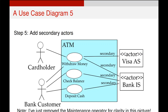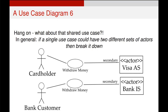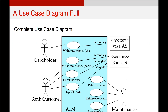The catch, though, is that you can have use cases which are different depending on which actor uses them. An example might be 'Withdraw Money': a cardholder should only be able to withdraw money via their Visa card, whereas a bank customer might be able to withdraw money from their internal bank account — particularly if you're using an overseas ATM. If this is the case, we separate those two use cases out to look at something like this.